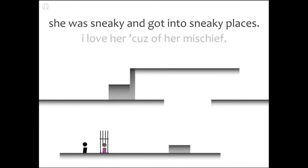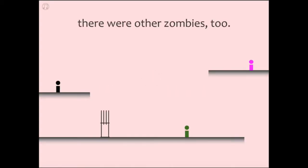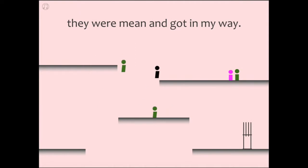Act two, lovers in a dangerous time. There were other zombies too, but none of them were like her. She was different, she also moved a bit faster because she wanted the D. They were mean and got in my way.